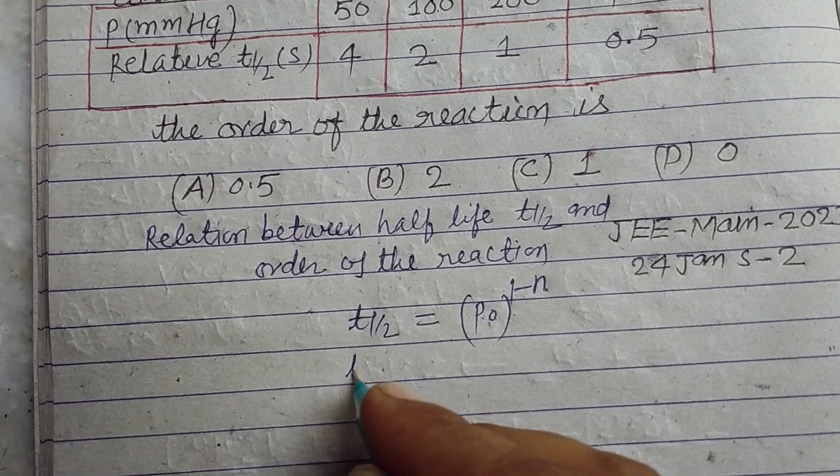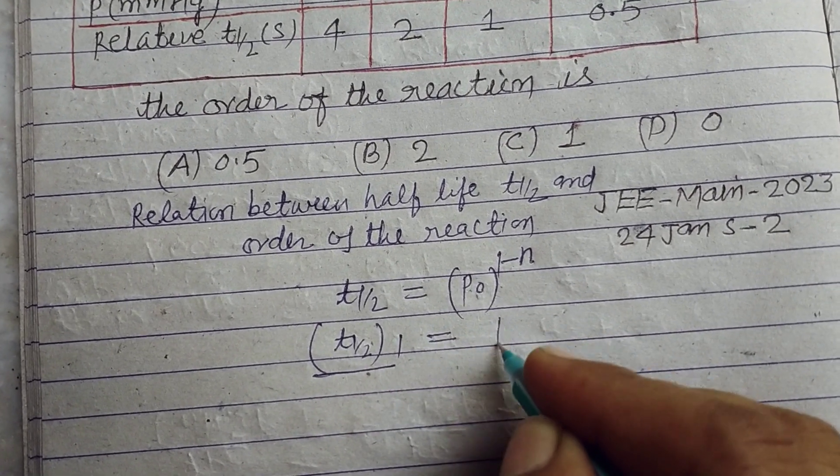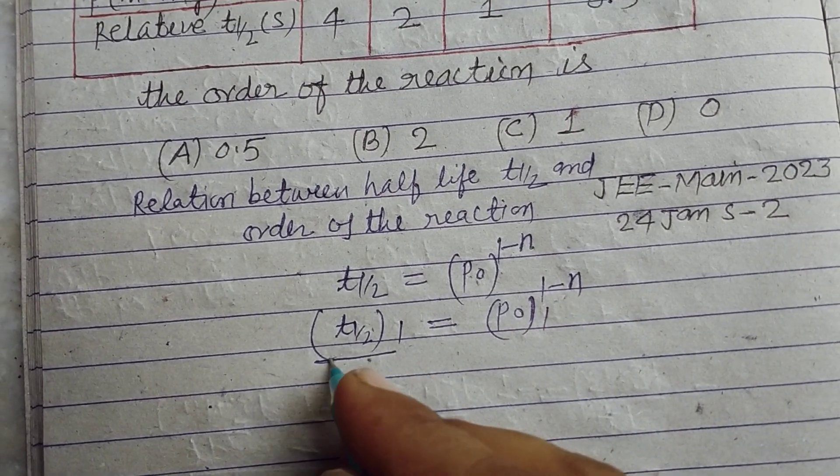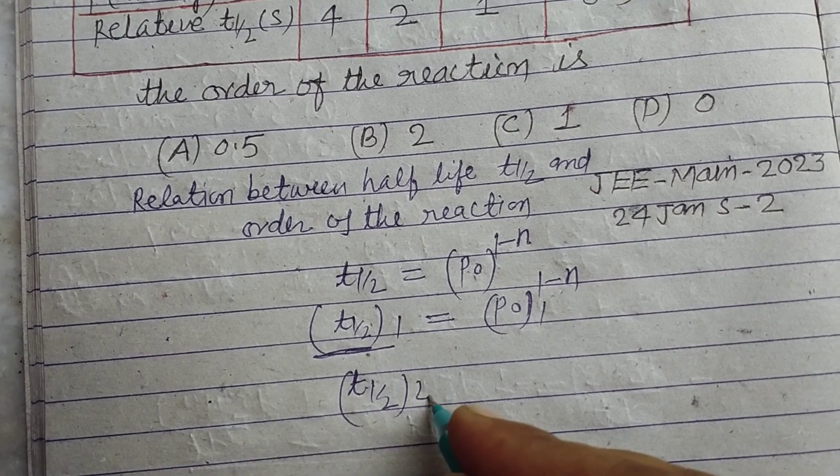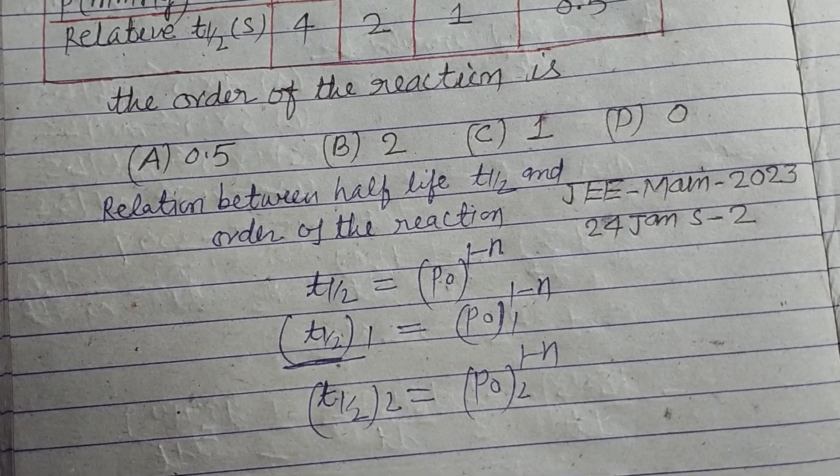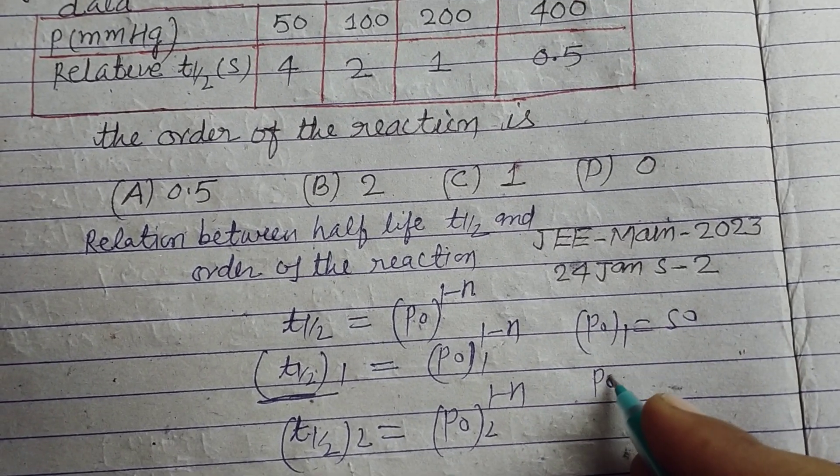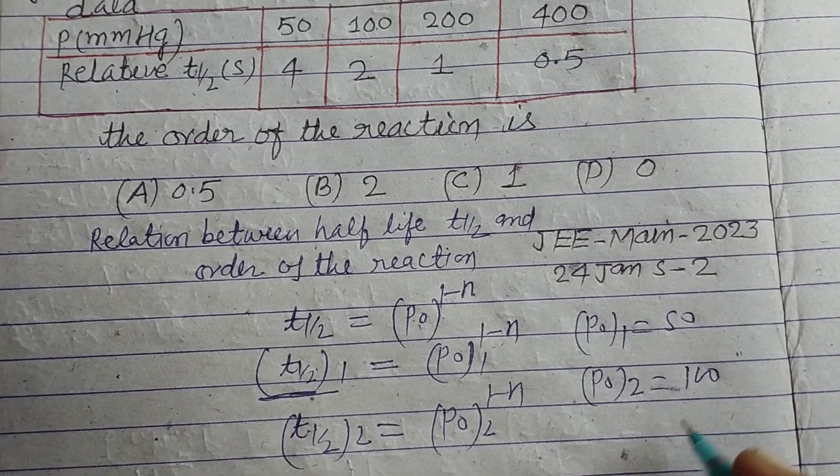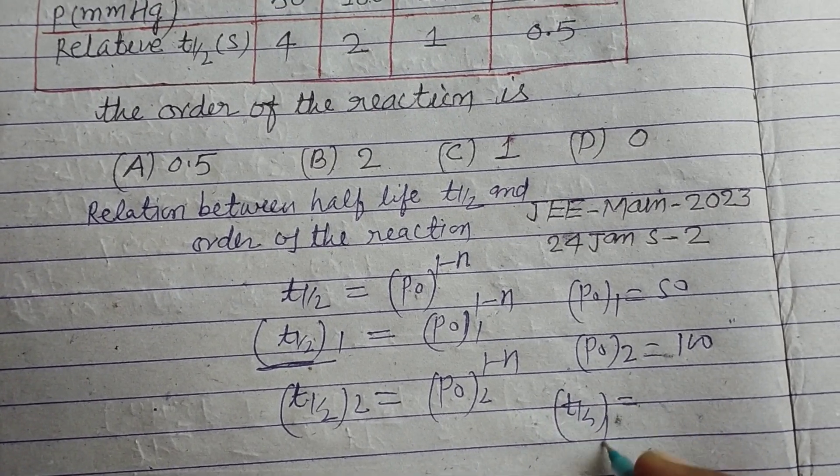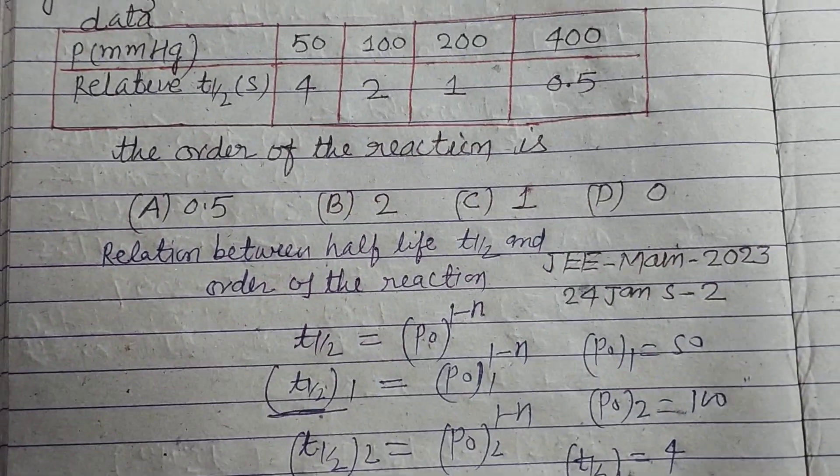So student, here we take T1/2 one is equal to P0 one to the power of 1 minus n, and T1/2 two is equal to P0 two to the power of 1 minus n. Here pressure of the gas P0 one is 50, P0 two is 100, and T1/2 one is 4, T1/2 two is 2.